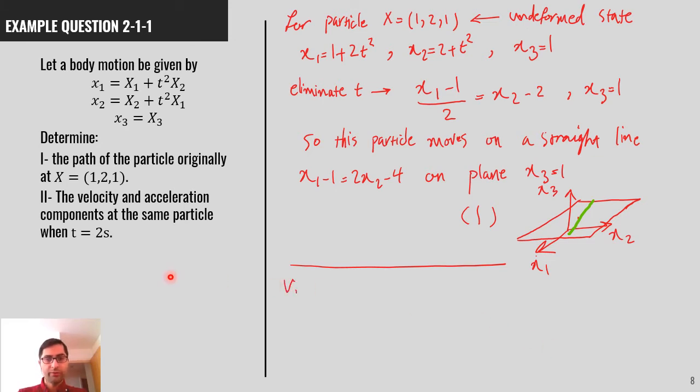Okay, for part 2, the velocity and acceleration, we simply need to calculate the time derivative of x for the given particle position, capital X 1, 2, 1. So, V is partial x, partial t, and in our case, it is 2t X2 for V1. For V2, it is 2t X1.